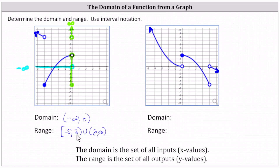Now let's look at our second example. Starting with the domain, we analyze the graph from left to right. We can see the graph continues to the left indefinitely, and therefore x approaches negative infinity. Moving to the right, we do have a break in the graph at x equals zero, but we have a closed point zero comma three here, which indicates the function is defined at x equals zero, and x equals zero is in the domain.